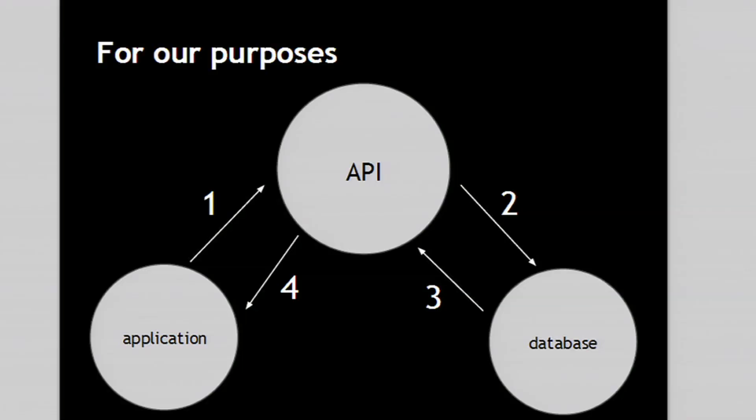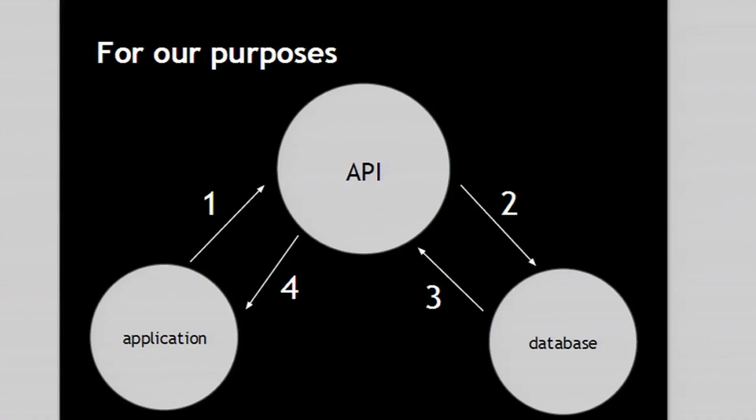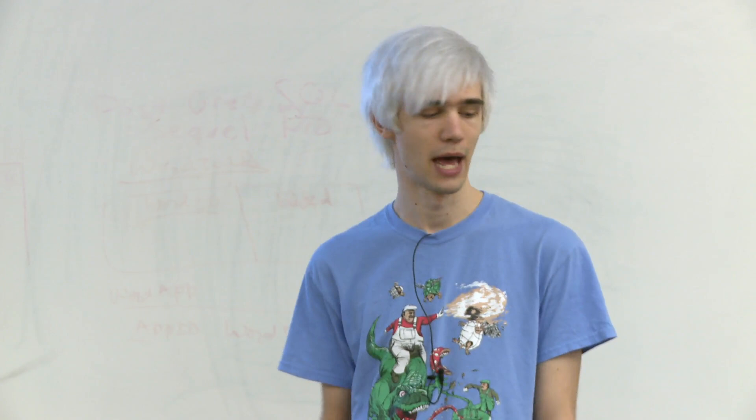The idea is that querying the database directly is going to be very complicated and messy — it's probably going to involve SQL tables and all of that, which can be a real pain. So what we really want is some simple way to tell the API what to get for us, and a simple way to get that data back.